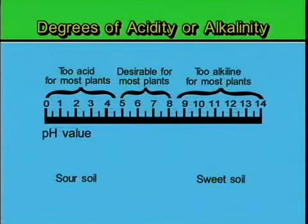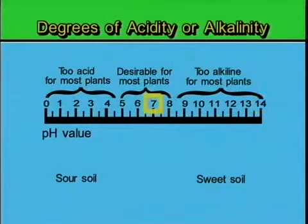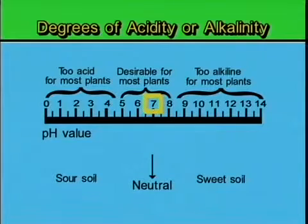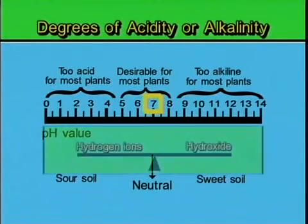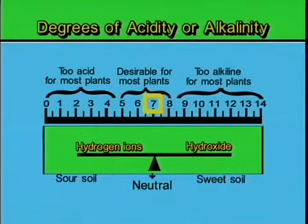The pH scale is expressed in numerical values from 0 through 14. The value 7, or the halfway point on the scale, is called neutral. If we have a soil with a pH of 7, the hydrogen and hydroxide ion concentration will be the same in that soil.